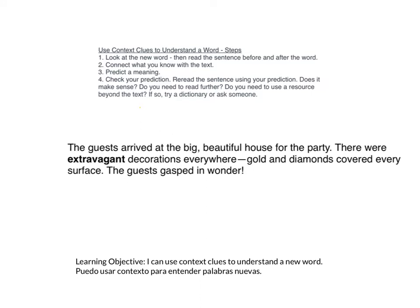The steps to use context clues to understand a word are up here. You're going to look at the new word, then read the sentence before and after the word, connect what you know with the text, predict a meaning, and check your prediction — that means re-reading the sentence using your prediction.